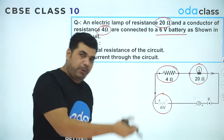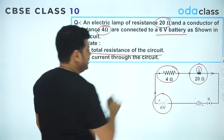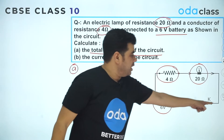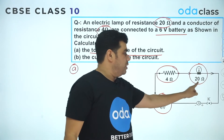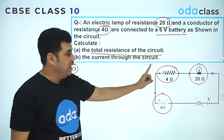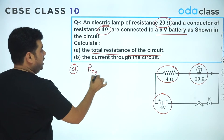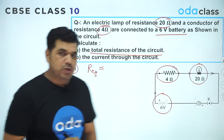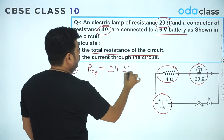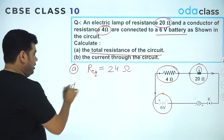For part (a), the total resistance of the circuit: the lamp has 20 ohms resistance and the conductor has 4 ohms resistance, and they are connected in series. For a series combination, R = R1 + R2, so the equivalent resistance is 20 + 4 = 24 ohms. That is the answer to part (a).